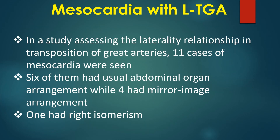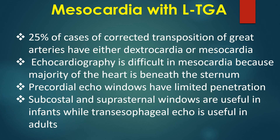In a study assessing the laterality relationship in transposition of great arteries, 11 cases of mesocardia were seen: 6 had usual abdominal organ arrangement, 4 had mirror image arrangement, and 1 had right isomerism. Overall, 25% of cases of corrected transposition of great arteries have either dextrocardia or mesocardia.